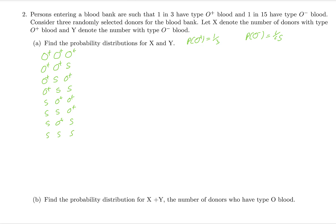The X values from these possibilities are: when all three are O plus, X equals 3; when two are O plus, X equals 2; when one is O plus, X equals 1; and when none are O plus, X equals 0. Therefore X can take values 0, 1, 2, and 3.